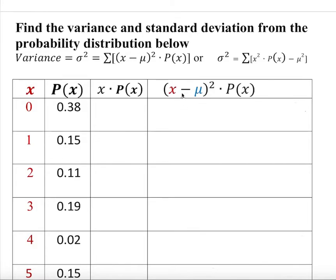All right so I need a mean and it's going to come from here. Let's do one at a time. So if I multiply zero times anything is going to be zero and clearly if I do this one times that is going to give you 0.15 and two times 0.11 is going to give me 0.22 and three times that is going to be 0.57 and four times 0.02 is going to be 0.08 and five times 0.15 is 0.75 and I am going to add all this up.